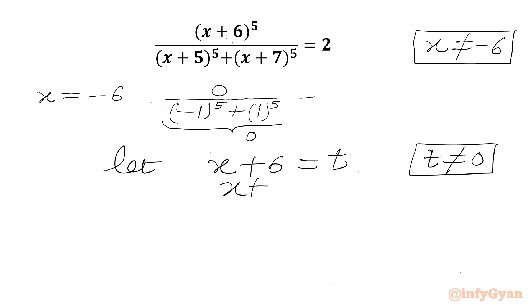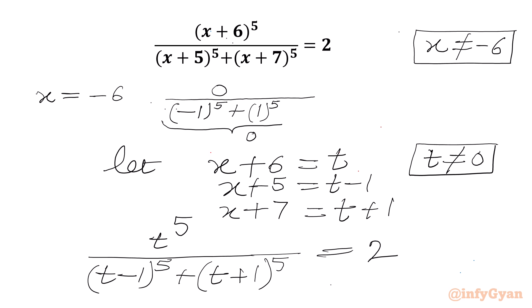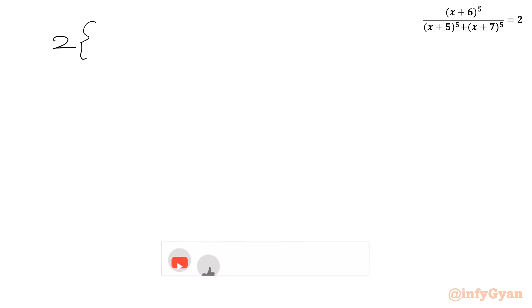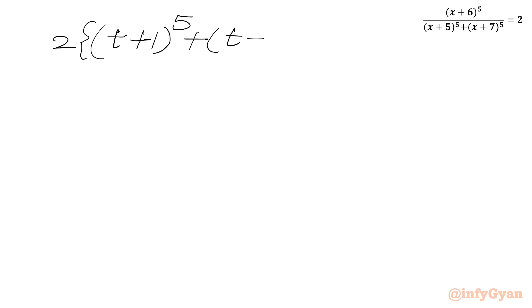So x+5 will be t-1, and x+7 will be t+1. After cross multiplying, we write 2 times [(t+1)^5 + (t-1)^5] equal to t^5.